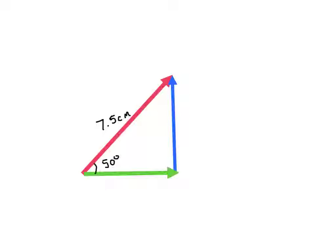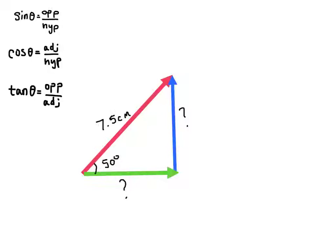Here's what we know about this vector. It's 7.5 centimeters at an angle of 50 degrees. I want to find the green length and the blue length. We can use our trig functions to find those different sides. The blue side is opposite to the angle, so I can use the sine function. The green one is adjacent, so I can use cosine. Let's start with sine.